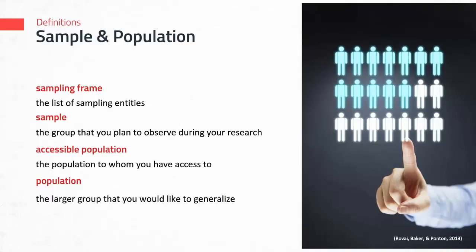Let's start by reviewing definitions of a few important terms you've probably heard before. First, there's the term sample. The sample is the group of individuals that you plan to observe during your research. Usually your sample comes from your sampling frame or accessible population. The sampling frame refers to the list of the sampling entities — that's the individuals, organizations, or other planned unit of analysis — a list from which your potential participants are drawn.